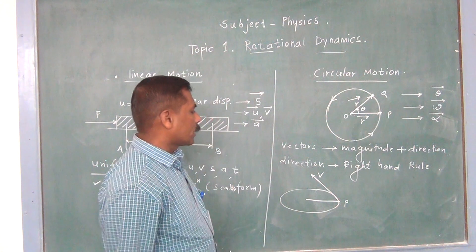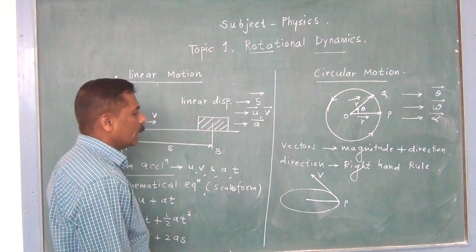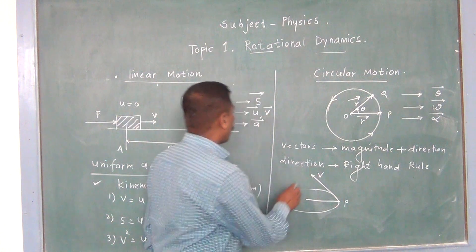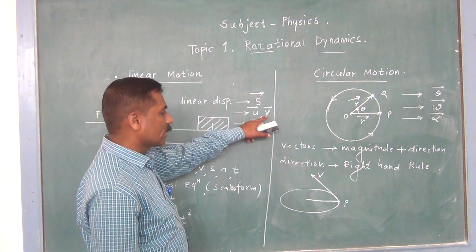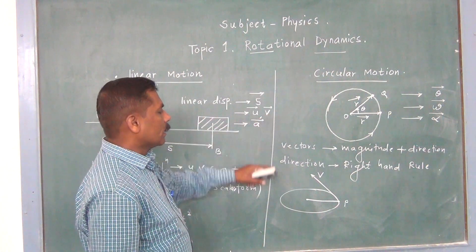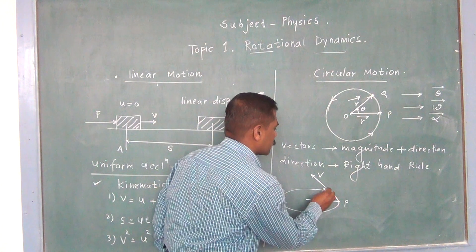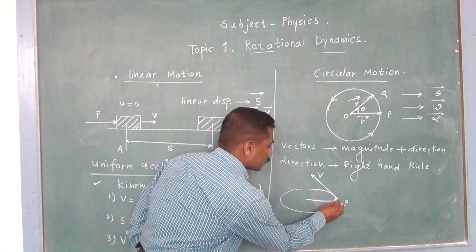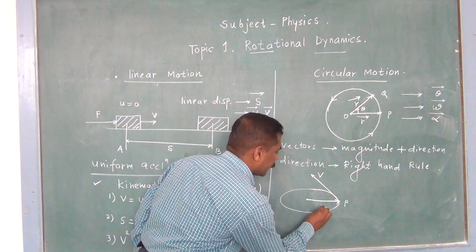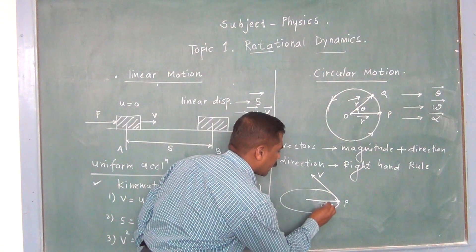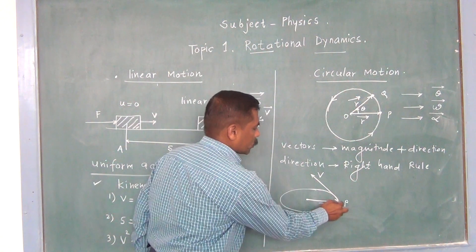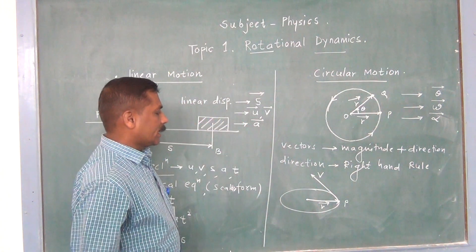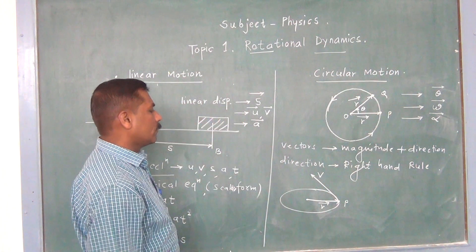This direction is denoted as V, which is called as linear velocity, also called as the tangential velocity. It is denoted as the radius vector and it is denoted as the tangential velocity.